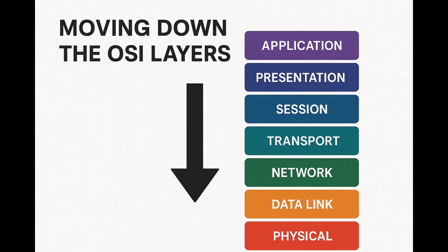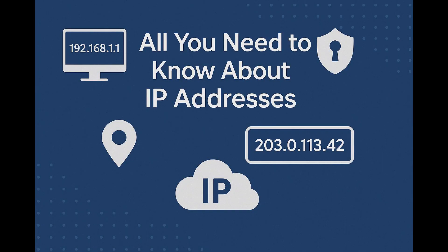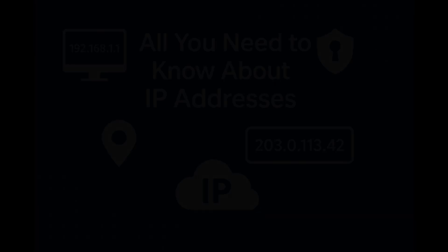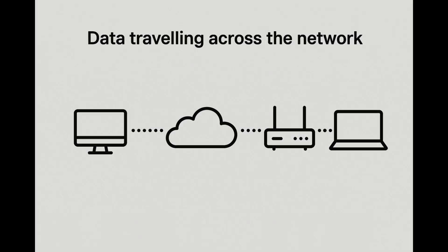At layer three, data becomes a packet which contains an IP address and therefore an IP header. I will also create a separate video only about IP addresses and IP headers because it's super fascinating and super important to know. When data is moved from layer three to layer two, it becomes a frame, and in practice this frame now contains the MAC address. We can also say that this frame at layer two contains a packet encapsulated when traveling across the network. Then it will reach the destination, be decapsulated, and the IP header will be restored.